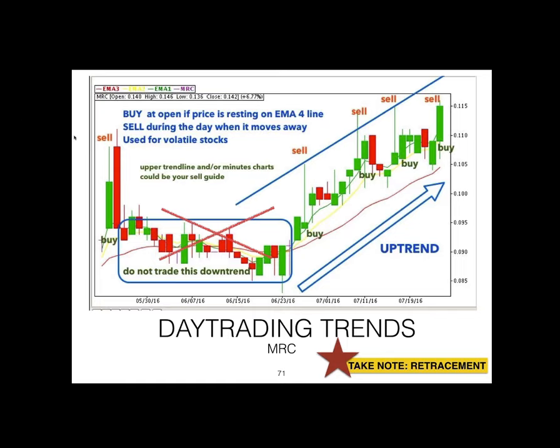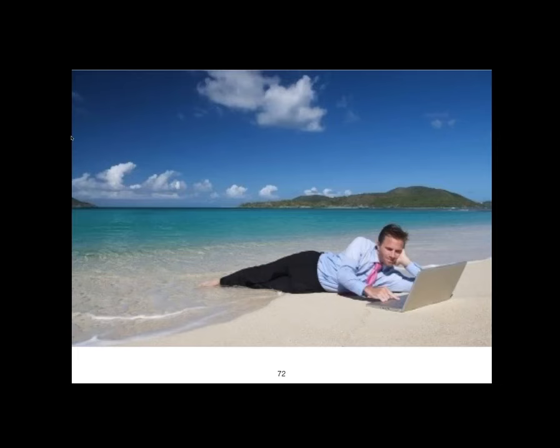You're not supposed to trade the part of the chart that is in a downtrend — even if the stock is highly volatile. You have to choose the period in which it is tradable. At the X mark it's going sideways, so do not trade that — only trade it when it starts going up. So ask yourself: are you a day trader?